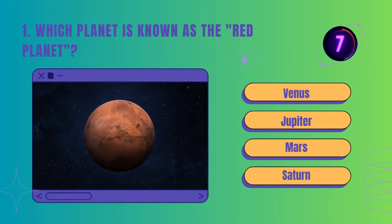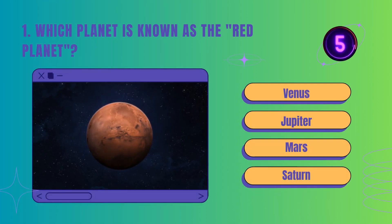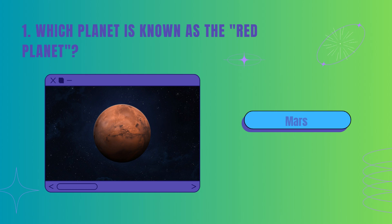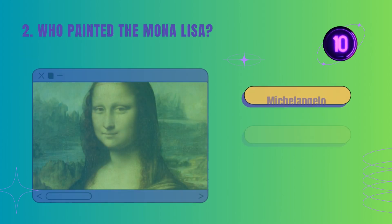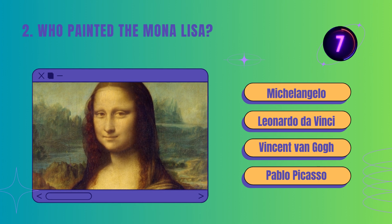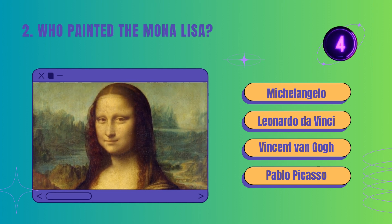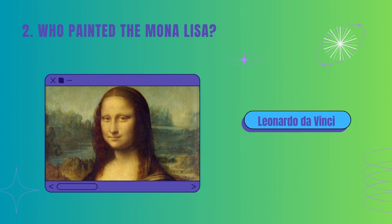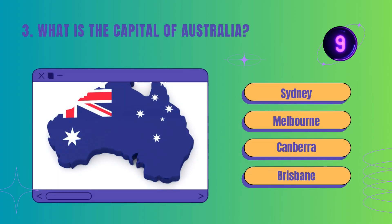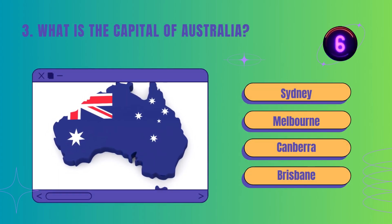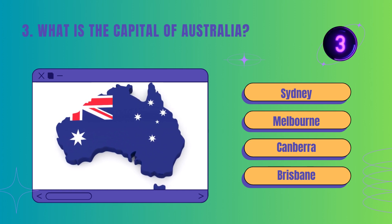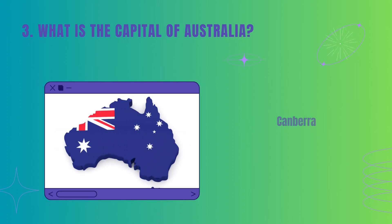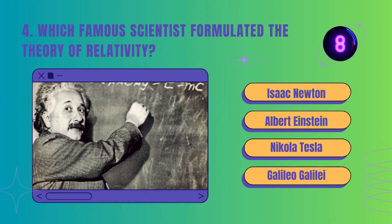Which planet is known as the Red Planet? Who painted the Mona Lisa? What is the capital of Australia? Which famous scientist formulated the theory of relativity?